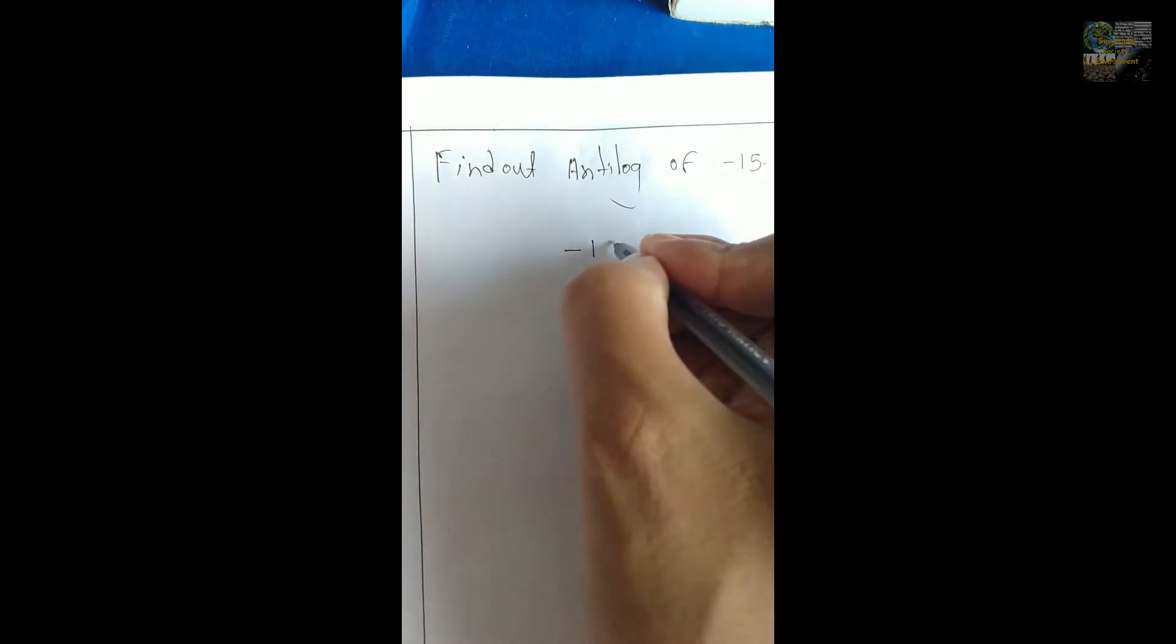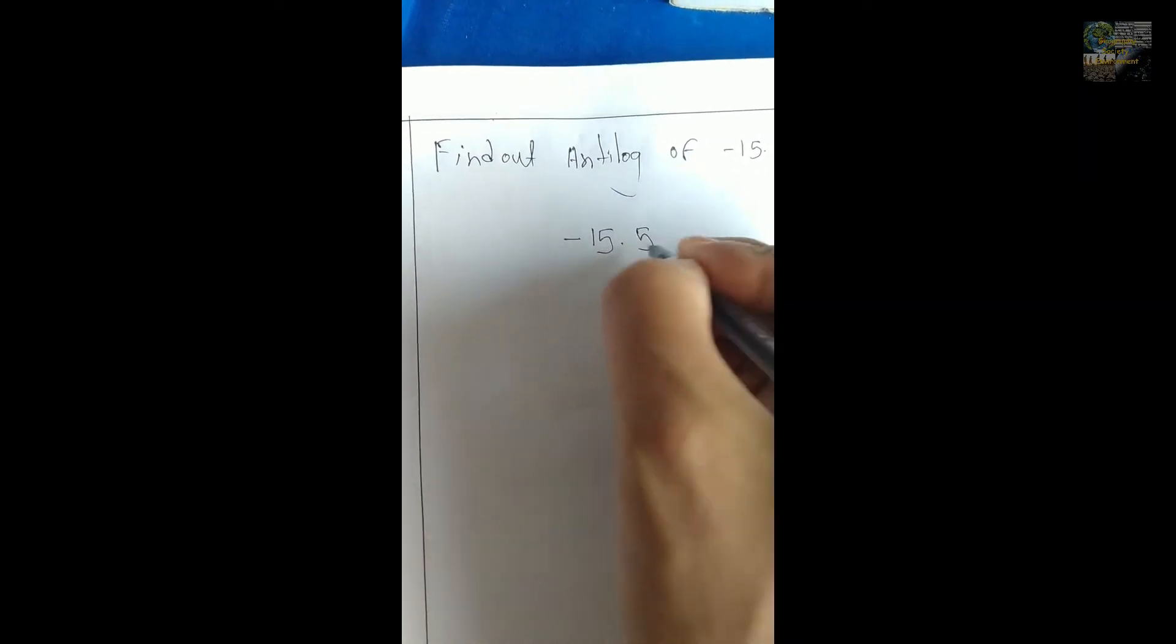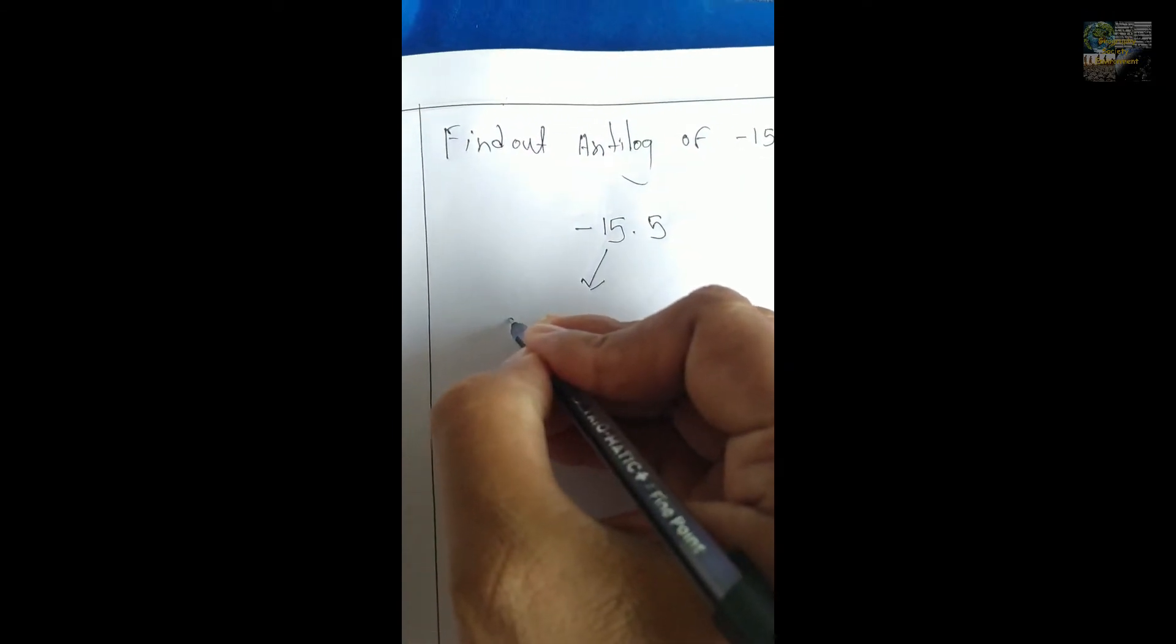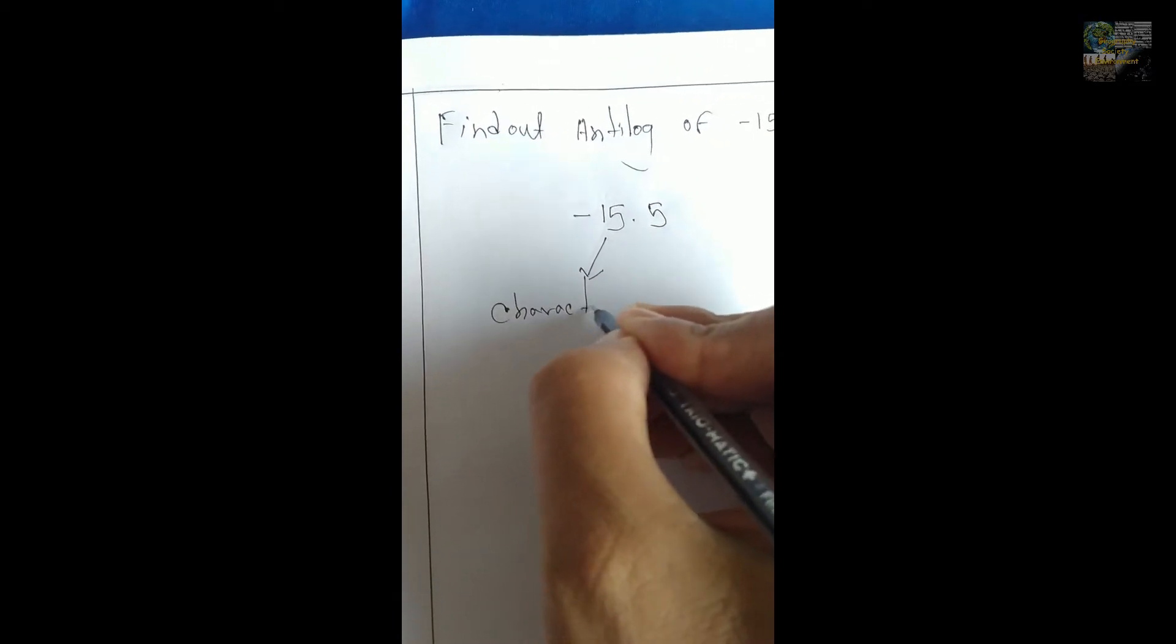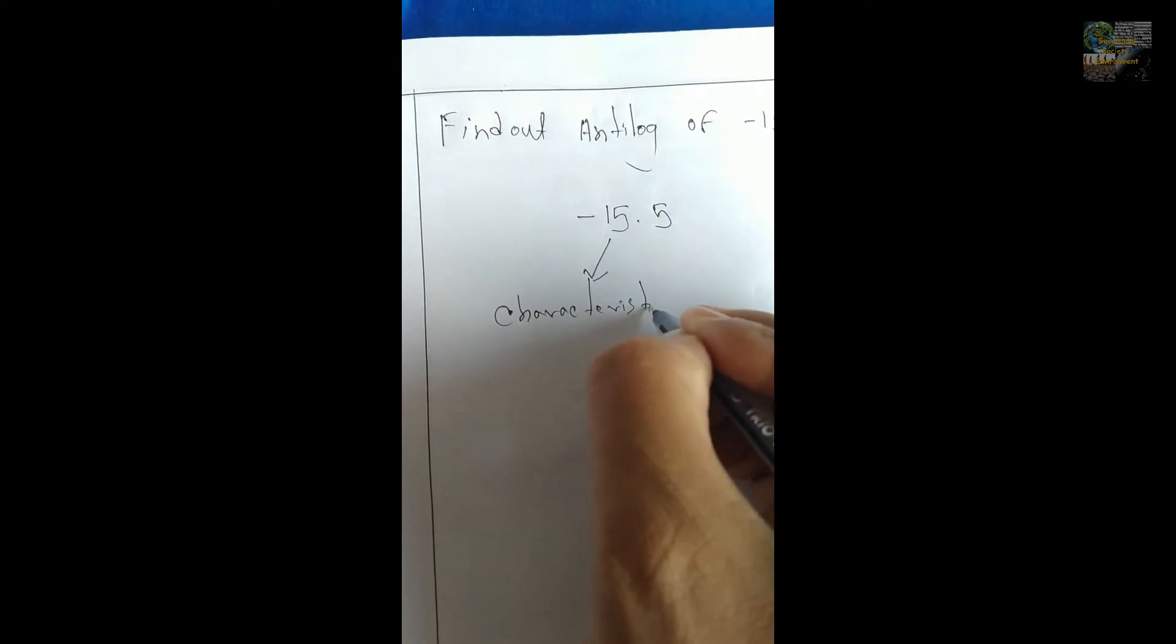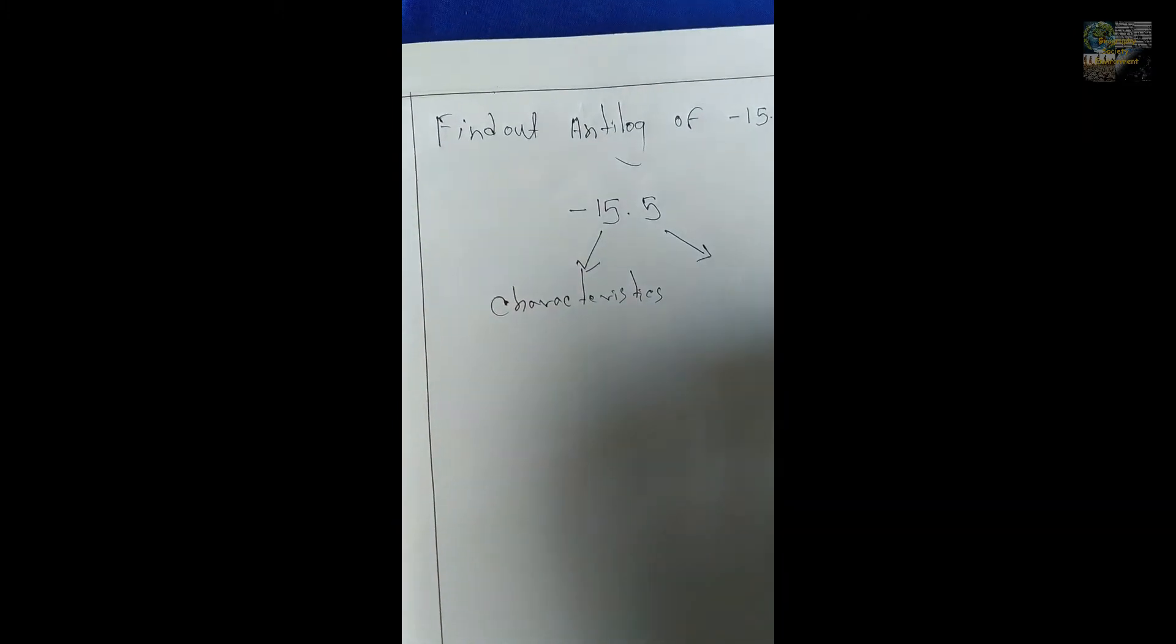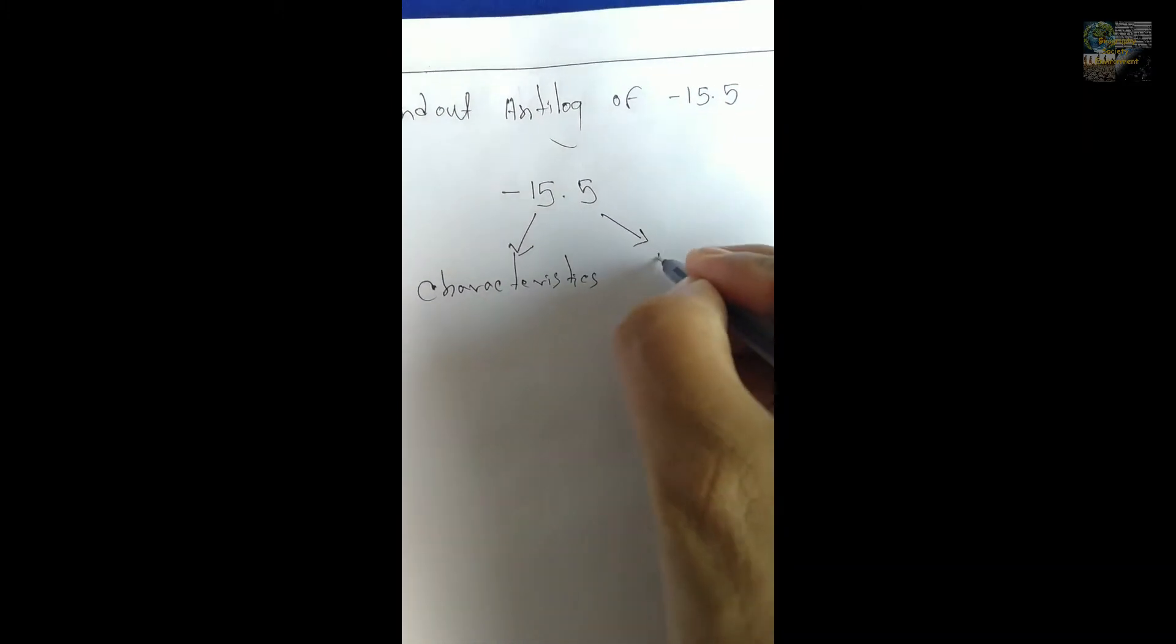You can see that the value is minus 15.5. Here, minus 15 is the characteristics part. On the other hand, minus 0.5 is the mantissa part.